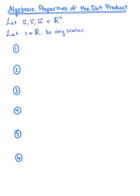In the last example, we were introduced to our first algebraic property of the dot product. I want to provide you with some other important algebraic properties of the dot product that are going to help us in deriving the geometric formula for the dot product, as well as the formula for the projection of a vector onto another vector.